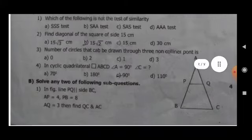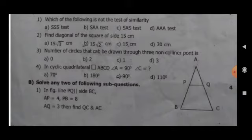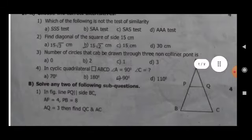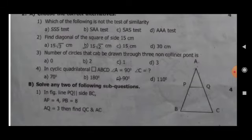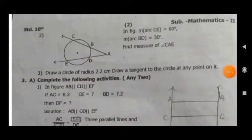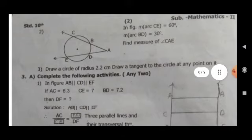Question 2 B, solve any two of the following sub-questions. For marks at 4. First, in figure, line PQ is parallel to line BC. AP is equal to 4, PB is equal to 8, AQ is equal to 3. Then find QC and AC. Second, in figure, measure of arc CE is equal to 60 degrees, measure of arc BD is equal to 30 degrees. Then find measure of angle CAE. Third, draw a circle of radius 2.2 cm. Draw a tangent to the circle at any point on it.